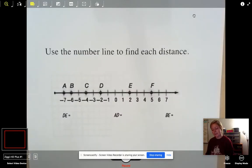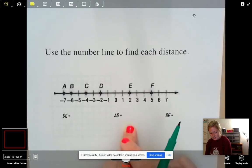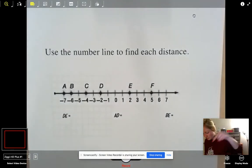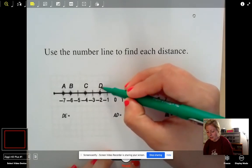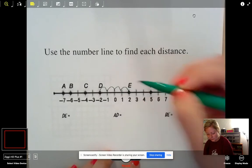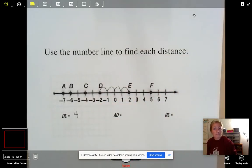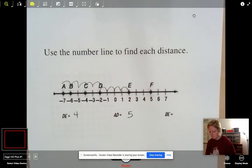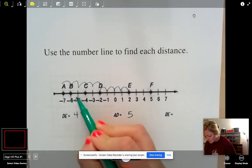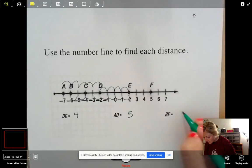This part's easy peasy. You guys get a head start. It says use the number line to find each distance. So take a second, find the length of DE, AD, and BE. Ready? Go. Just remember you're finding the spaces between each letter. So like if you're kind of struggling, like what do I count? Just kind of pretend like you're a frog and you're hopping. So like that'd be 1, 2, 3, 4. So the length of DE would be 4. Same thing with AD, 5. Then BE, 8.